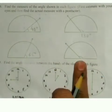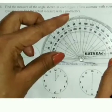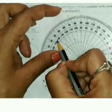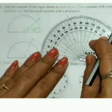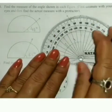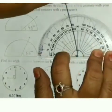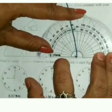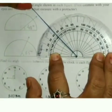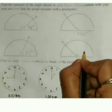And see this one — it is again obtuse. We will keep our protractor like this. It is coming between 130 and 140, just in the middle of 130 and 145. Exactly in the middle, so it is 135 degrees.